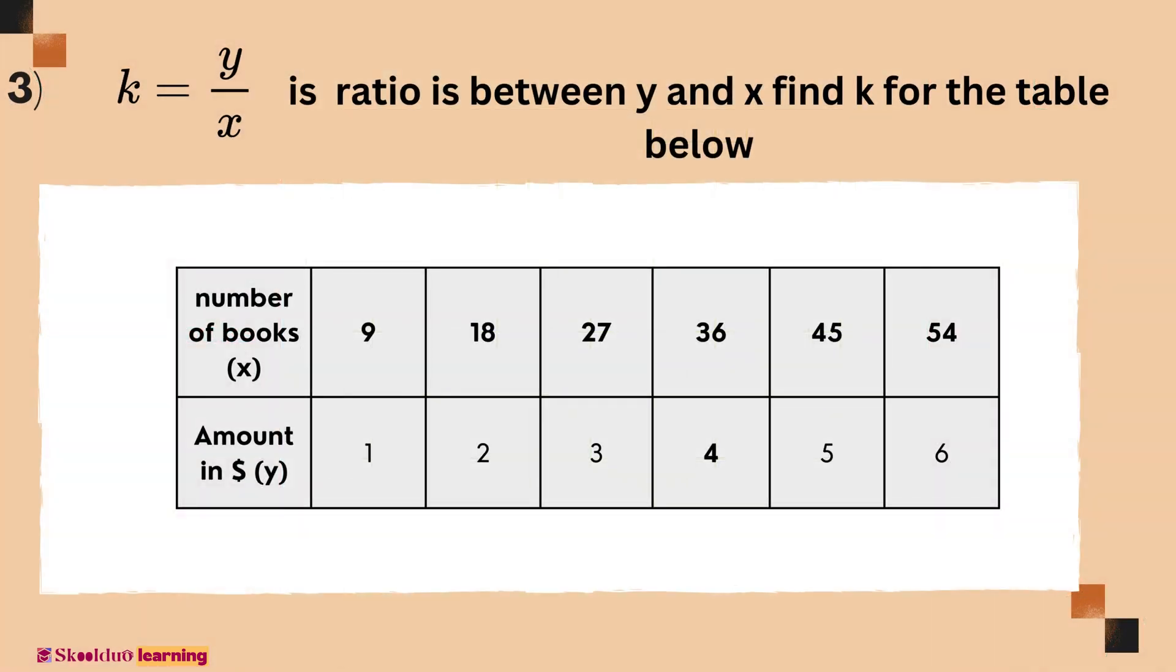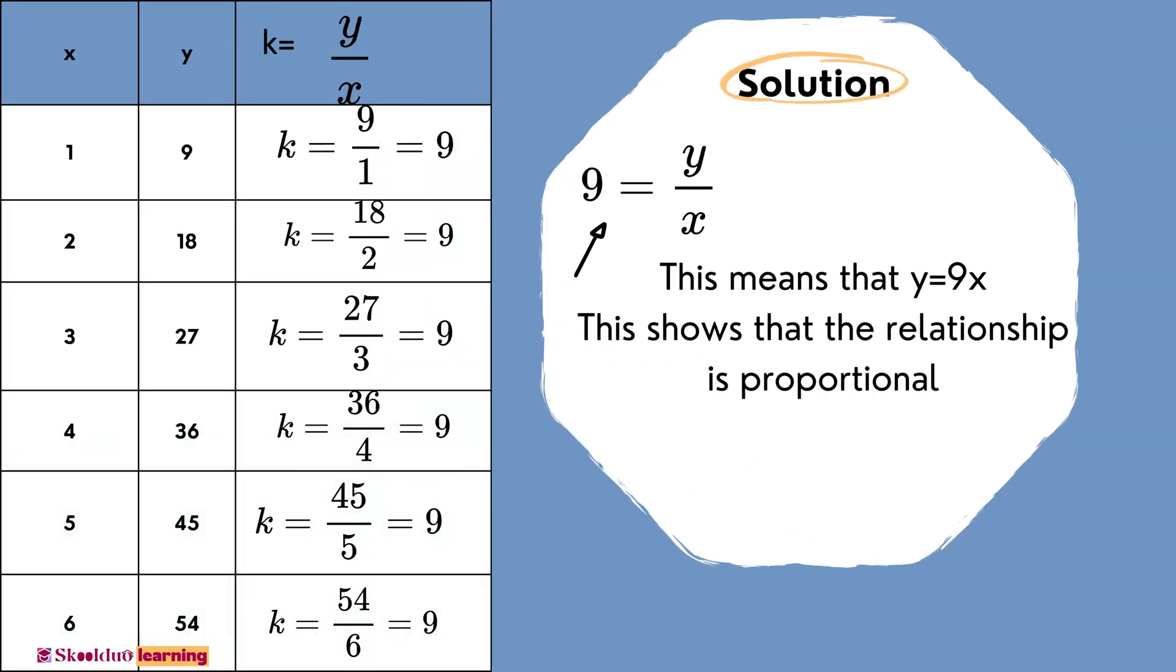Example number 3. K is the ratio between Y and X. Find K for the table below.